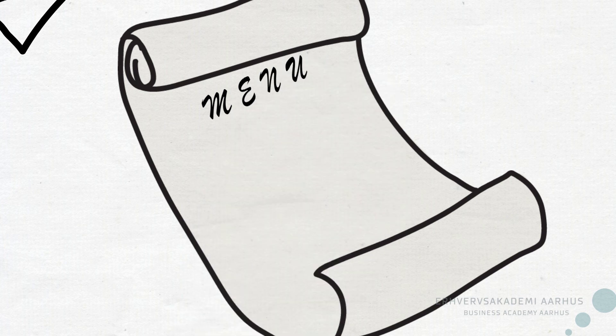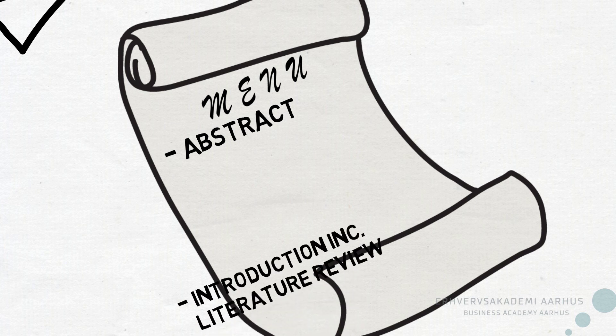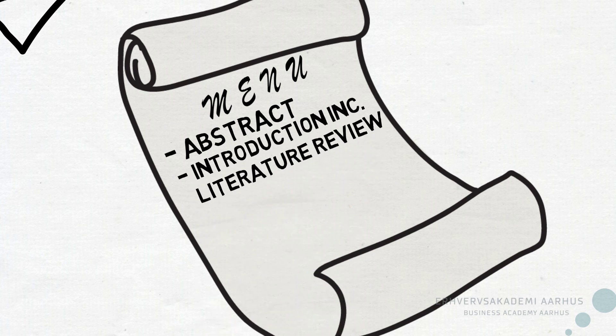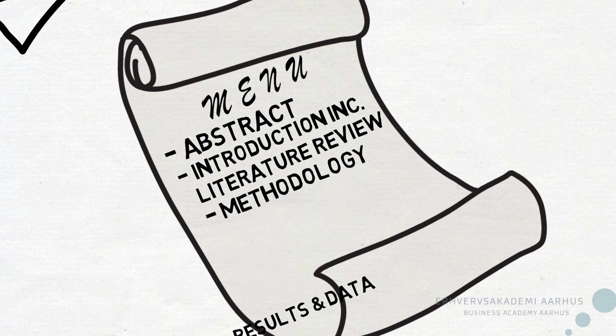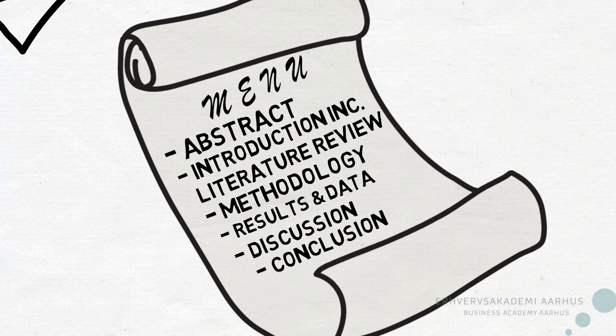Academic articles are always structured in the same recognizable way. An abstract sums up the article from A to Z. This is followed by the introduction and a presentation of the literature that was used — the literature review. After the methodology, all research data and results are discussed. The article is wrapped up with the conclusion — almost the same structure as your own study reports.